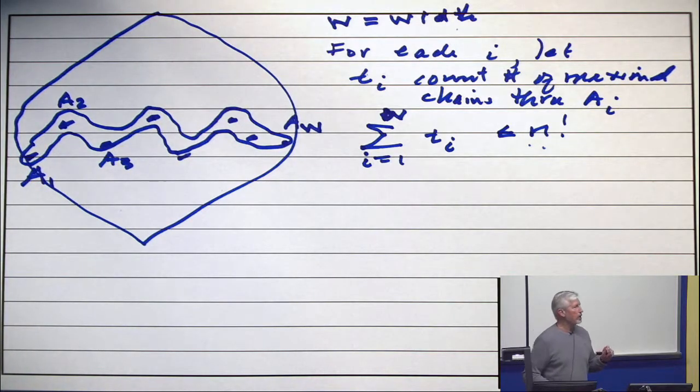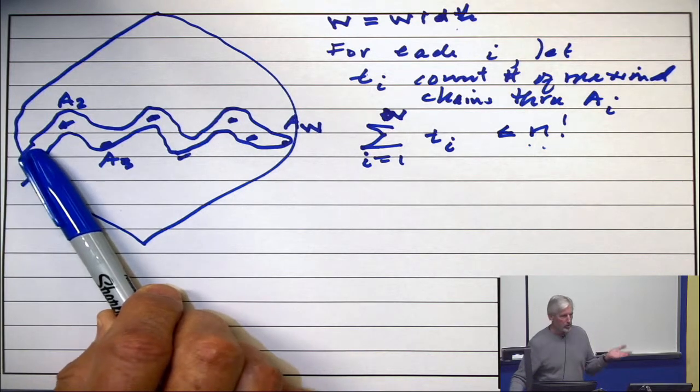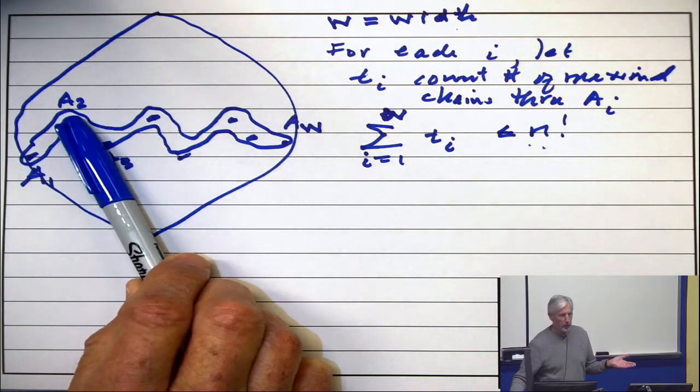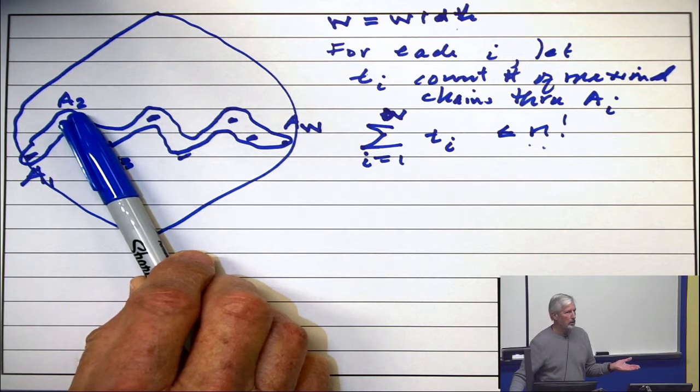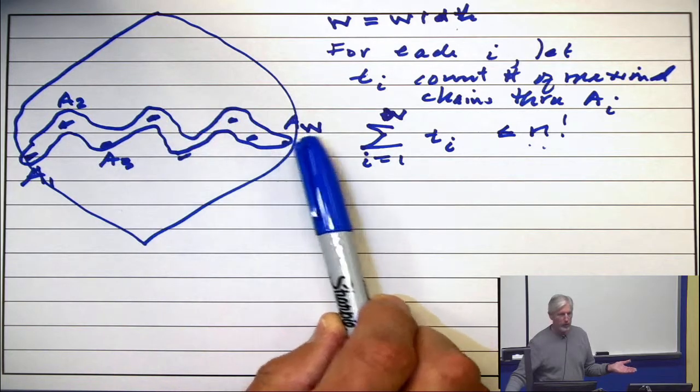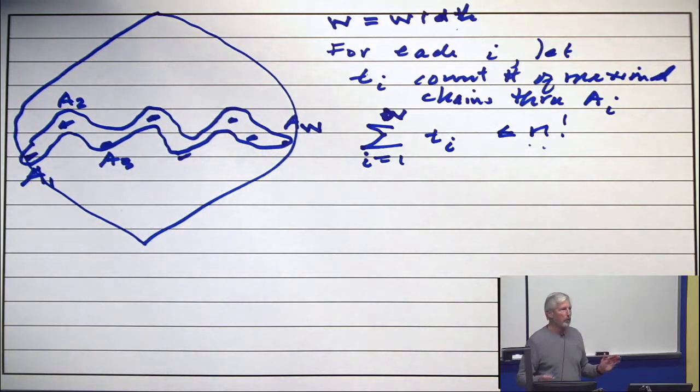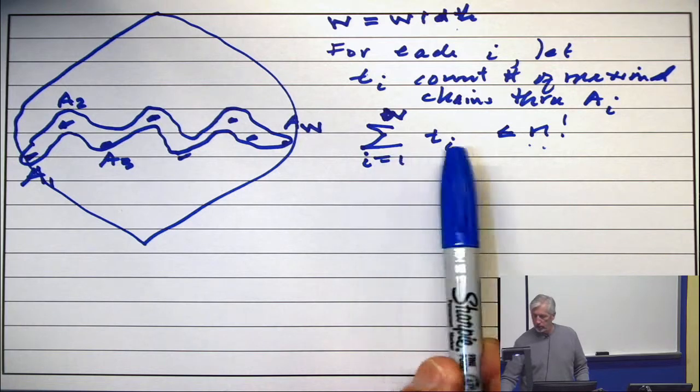But no maximal chain goes through two of them. So if you count the number that goes through this, that's T1. You count the number that goes through that, that's T2. But you're not double counting. And you count T3 and T4 and T5 over to T sub W. You haven't double counted any maximal chains. And there's only n factorial of them all together. So we get that sum.